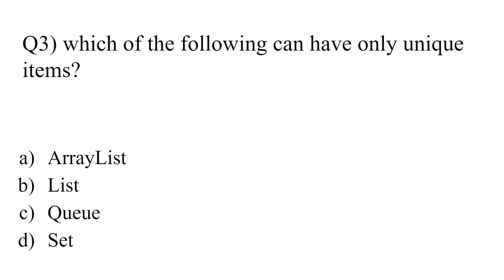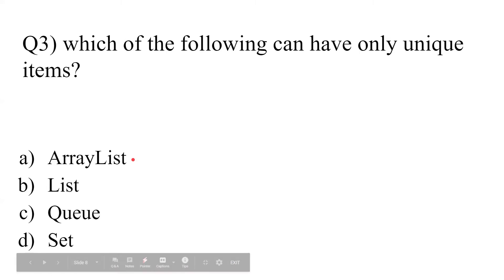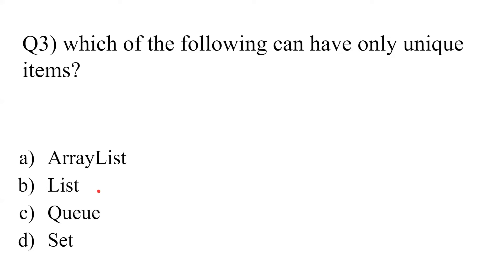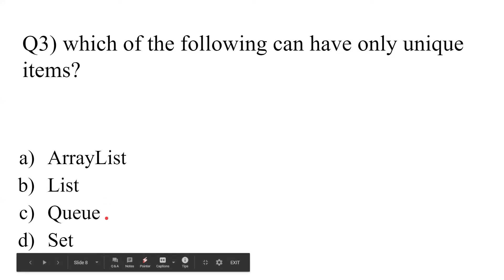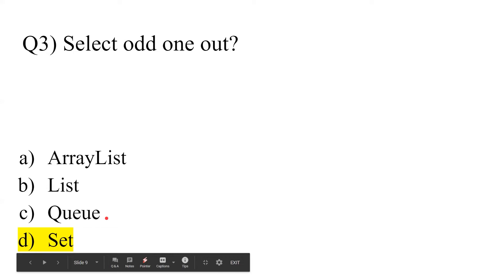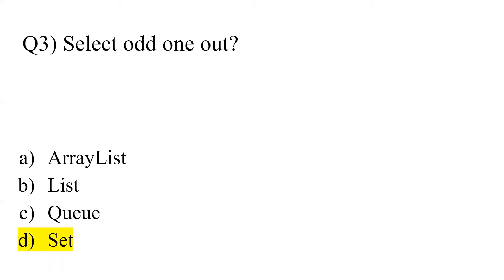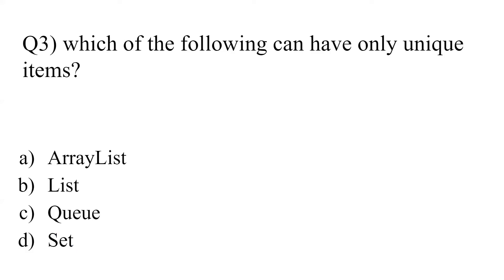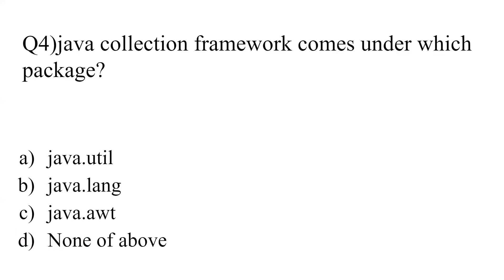Question 3: 'Which of the following can have only unique items?' — options are ArrayList, List, Queue, and Set. We can have duplicate items in ArrayList, List, and Queue, but Set is a data structure in which we do not have duplicate elements. So Set can only have unique items.